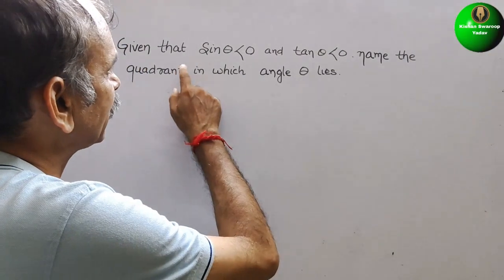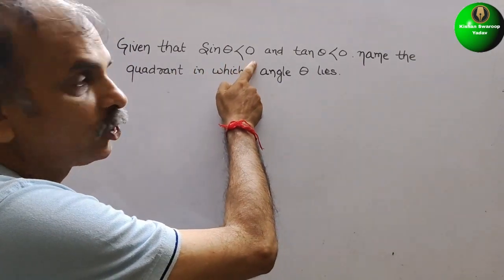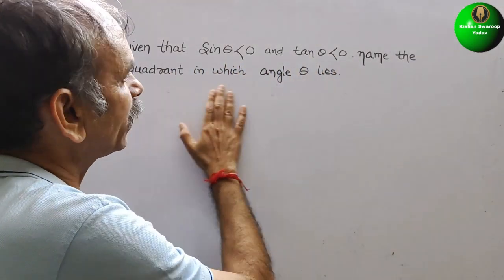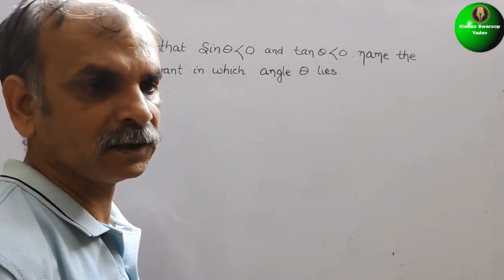Your question is: given that sin theta is less than 0 and tan theta is less than 0, name the quadrant in which angle theta lies.